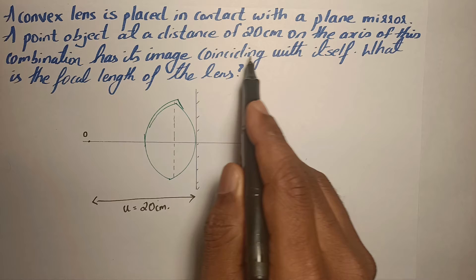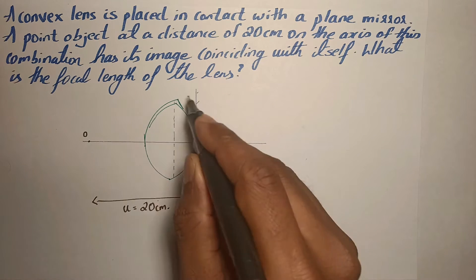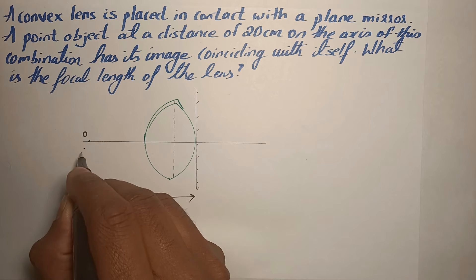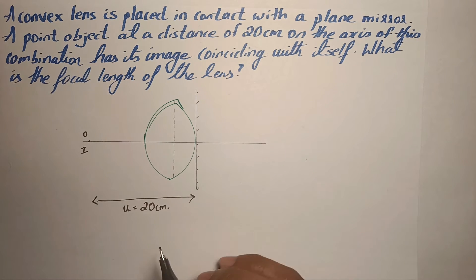It has its image coinciding with itself. So the image formed by this combination is also at the same point. The object is placed here and the image is also formed at the same point.